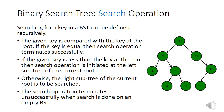In the search operation, a particular node having a key value is to be searched in the binary search tree. To search a key in a binary search tree can be defined recursively. First, the key is compared with the key at the root. If the key is equal, then the search operation terminates successfully. If the given key is less than the key at the root, then the search operation is initiated at the left subtree of the current root. Otherwise, the right subtree of the current root is to be searched. The search operation terminates unsuccessfully when search is done on an empty binary search tree.